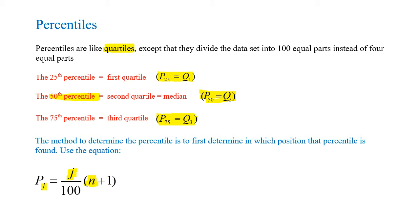This j represents the specific percentile that you are speaking of. So if you are speaking of the 25th percentile, then j is 25, which means j over here on the top is 25.